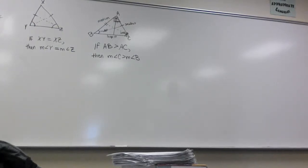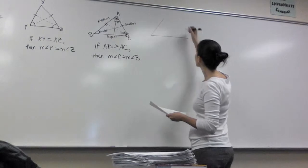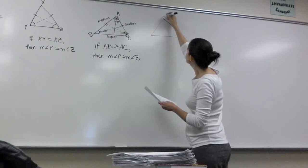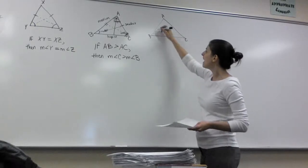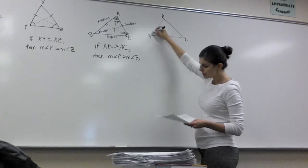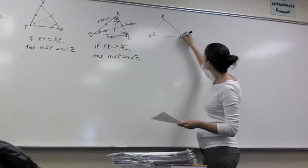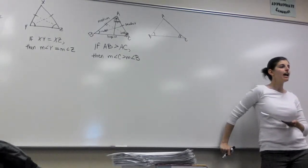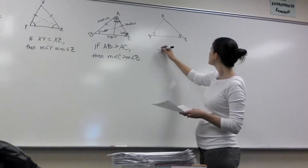If you know that the side across from an angle is the biggest side, you can conclude the angle across from it is the biggest angle. If you know that one of the angles is the biggest, you can tell me that the side across from that angle is also the biggest side. Now in the next triangle, triangle ABC again — if I tell you angle C is bigger than angle B, what do you know about the sides?